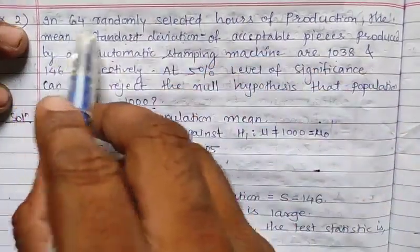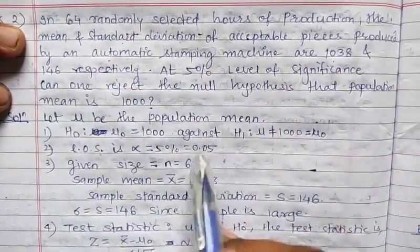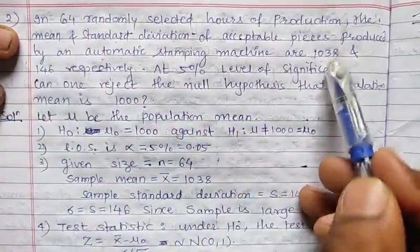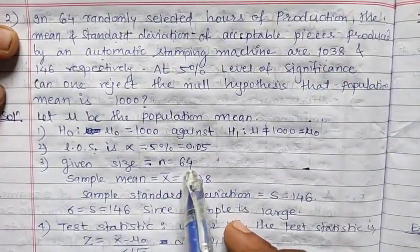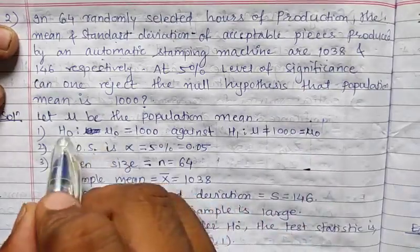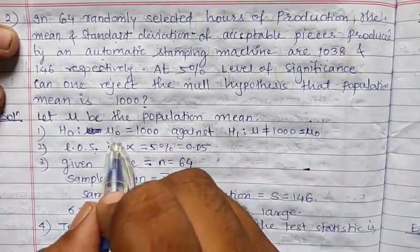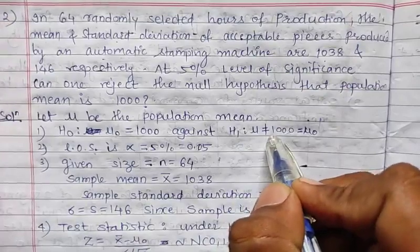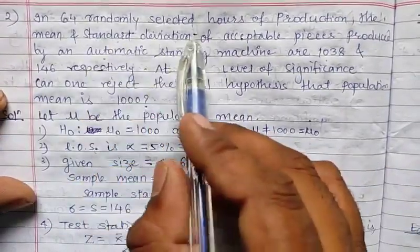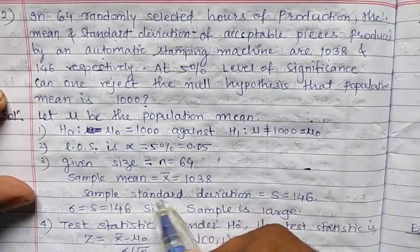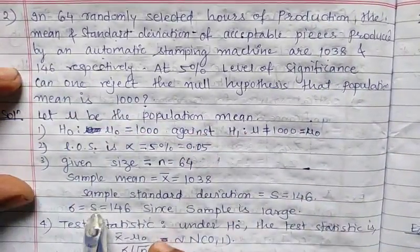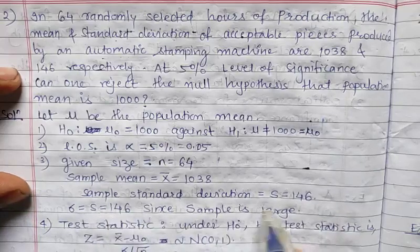In this example, we have given n = 64 hours. The value of x̄ is 1038. The level of significance is 5% and μ₀ is also given. We check H₀: μ = μ₀ against H₁: μ ≠ μ₀. From the sample, standard deviation is defined by s. So, sample standard deviation s = 146, and since the sample is large, s = σ = 146.